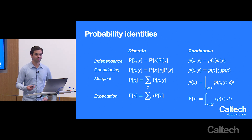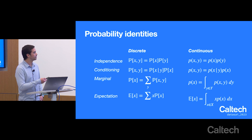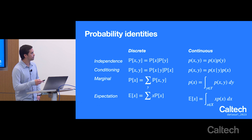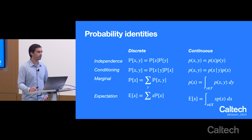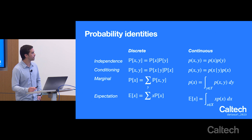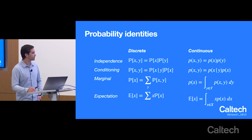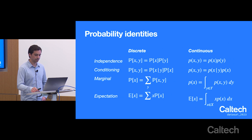To review a few probability identities: the first is independence — if two random variables are independent, we can factorize them. The second is conditioning — we can take a factor out and condition on a variable. The third is marginalization — if we sum over all probabilities of a random variable, we can eliminate it. And the fourth is expectation — where we sum over the probabilities of the random variable.